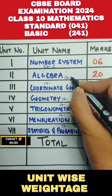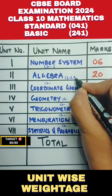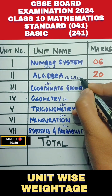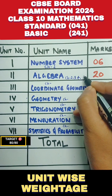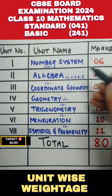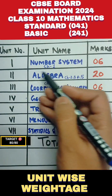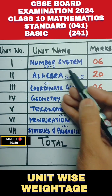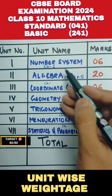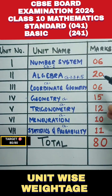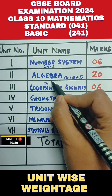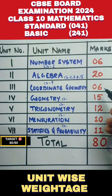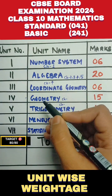Algebra is the maximum weightage unit of your maths book — it is the most important unit, worth 20 marks. Then we have Coordinate Geometry, that is Chapter 7, which will come for 6 marks.